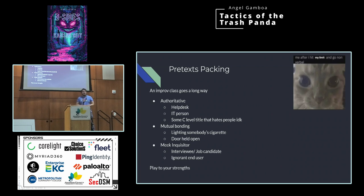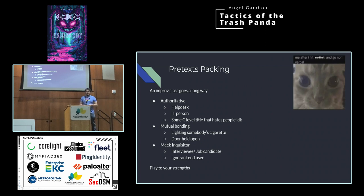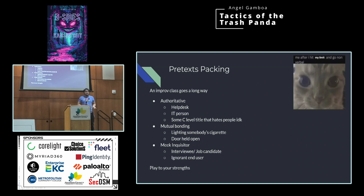Let's talk about pretext archetypes. There are a few I've selected because they're more of what I'm comfortable doing when I started out. You have the authoritative one — you can be a help desk or IT person, or some C-level title. You can have mutual bonding — light somebody's cigarette, have the door held open, or say 'hey, I'll help you with that box.' You can be an inquisitor, an interviewee or job candidate, or an ignorant end user. You can mix and match them as well. The main thing is to play to your strengths. Game is game — if you get inside the building, that's cool.